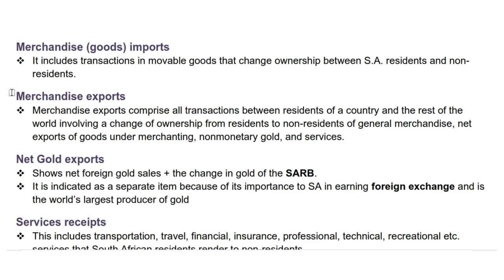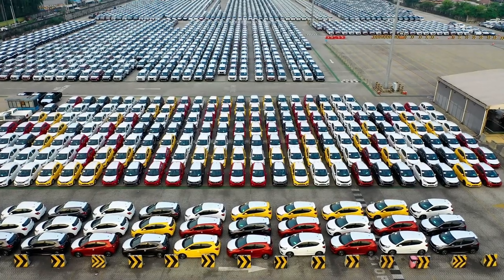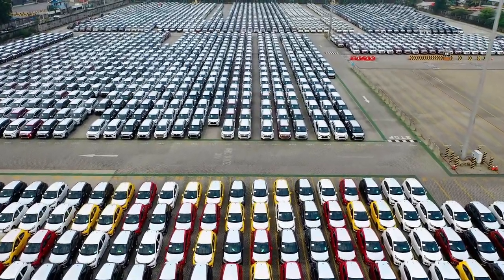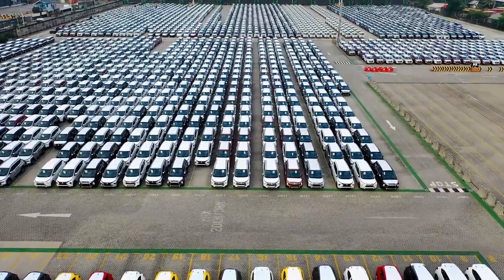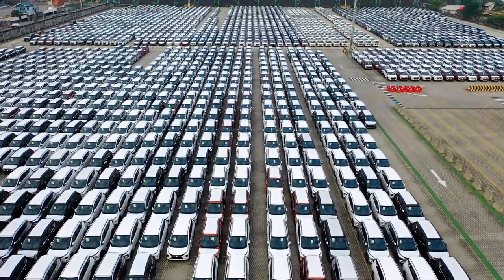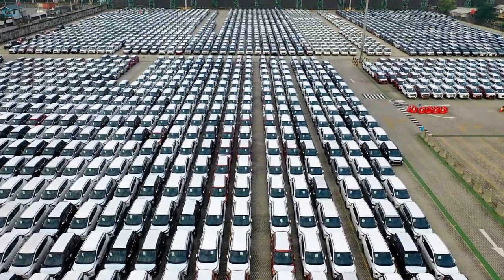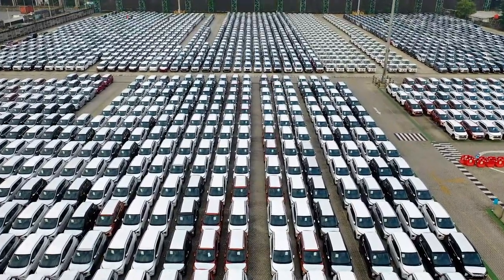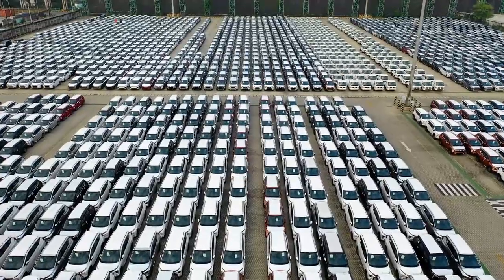Let us now look at the nine components of the current account — we need to figure out whether we add or subtract. The first component is merchandise imports. It includes transactions in movable goods that change ownership between South African residents and non-residents. For example, if South Africa imports cars from Japan, the value of those imported cars would be included in the merchandise imports of South Africa. With merchandise imports, cars came to our country from Japan, so we subtract since we have to pay Japan for those cars.